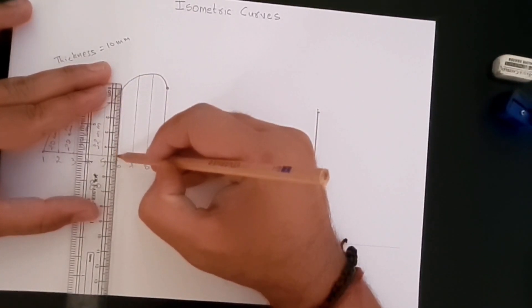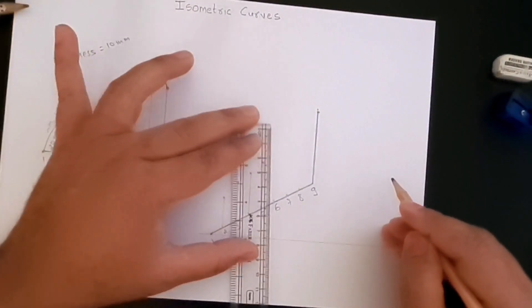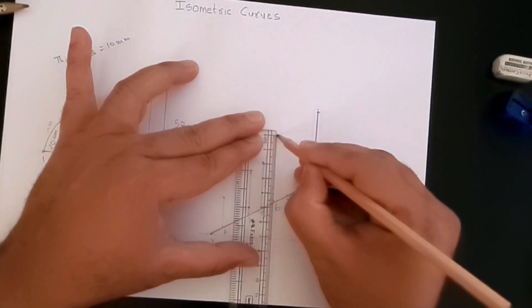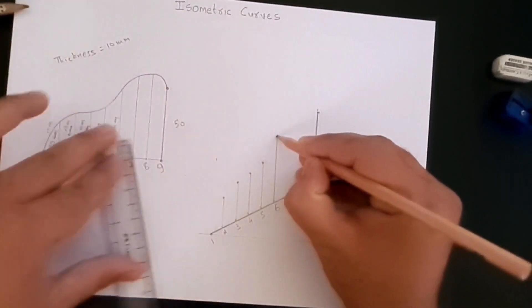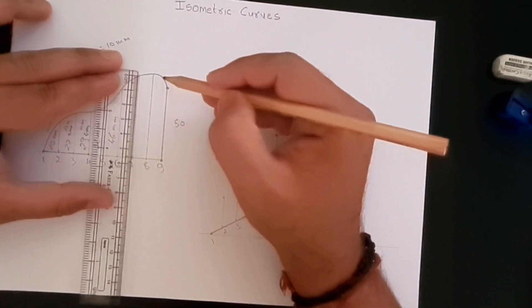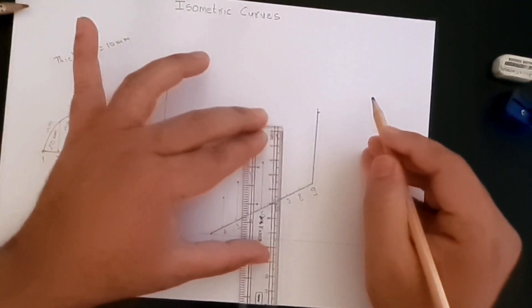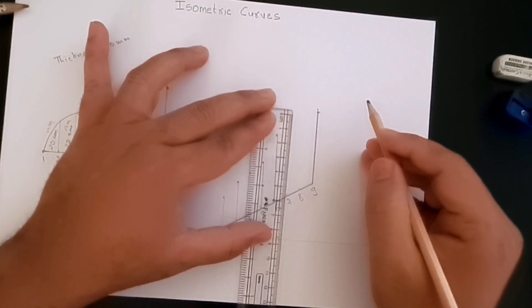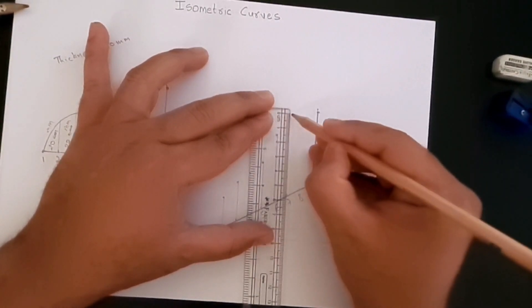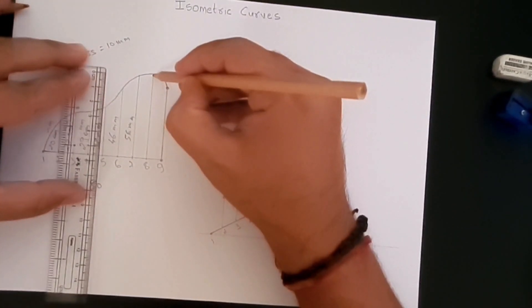For point number six we have 46 millimeters. This is 46 millimeters here. For point number seven, it is 56 millimeters, so here we'll create 56 millimeters. And here, point number eight, that is 59.